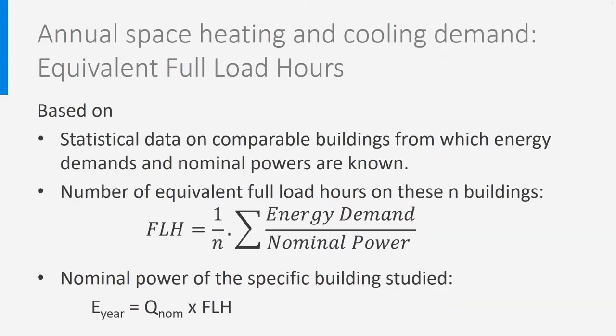The first method is to use equivalent full load hours. These equivalent full load hours are determined by studying the ratio of energy demand and nominal power for a large number of existing buildings. The average ratio of both is what we call the equivalent full load hours. Once you know these full load hours for your region and for the types of buildings under consideration, you just need to multiply the nominal power of your specific building by the full load hours to get an estimate of its yearly energy demand.